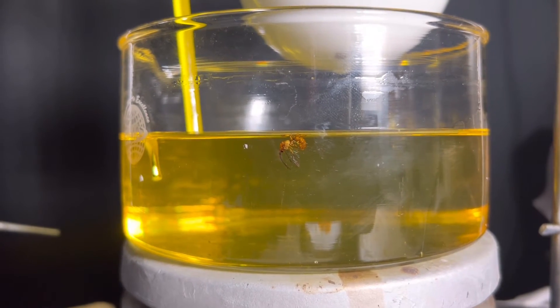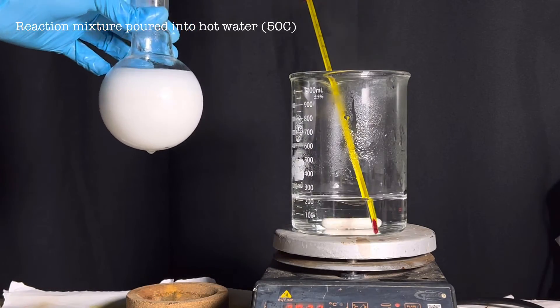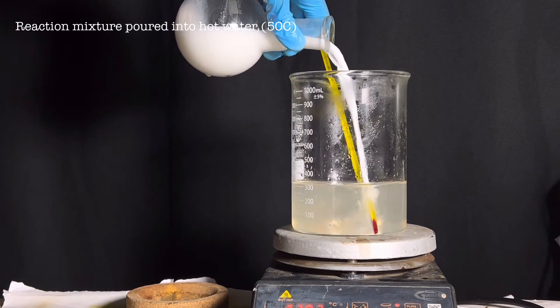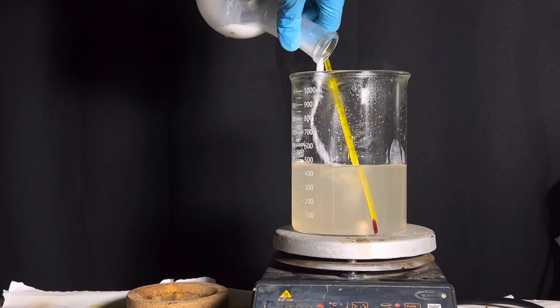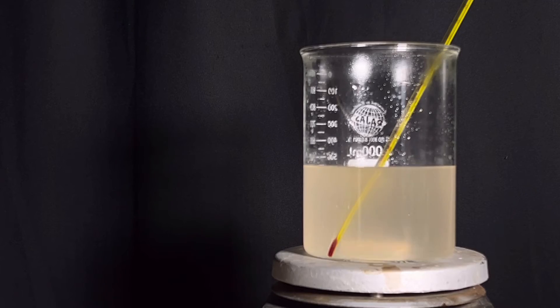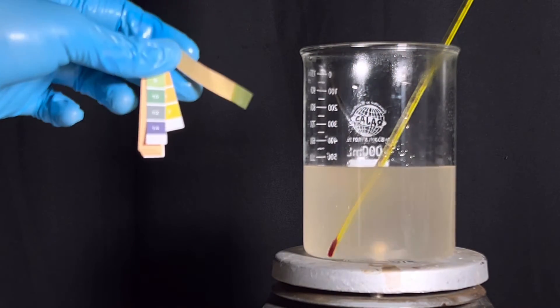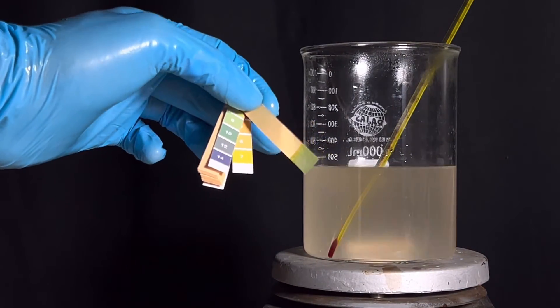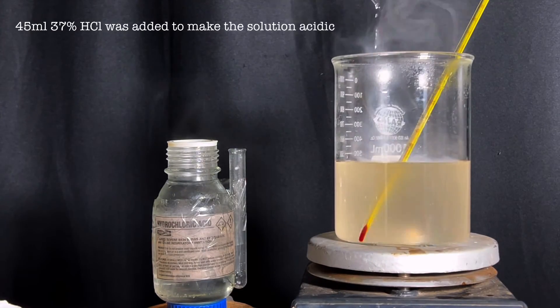Now let us move on. The reaction mixture was added to around 200 ml of hot water at around 50°C, and immediately all the white precipitate dissolved and the solution appeared somewhat clear. I tested the pH using indicator paper and found it to be basic. So I added concentrated 37% hydrochloric acid until the pH became acidic, adding around 45 ml total.